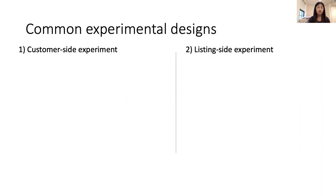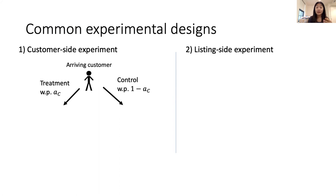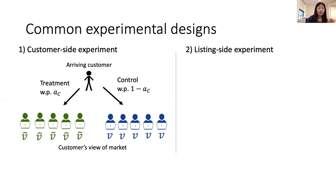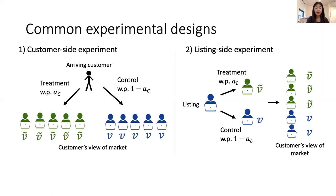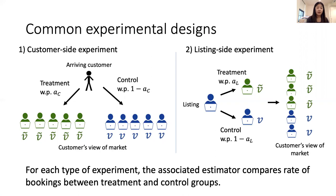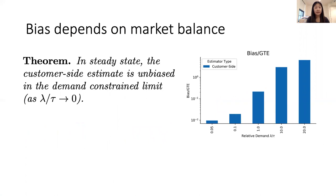Jumping back to the world of experiment designs: platforms commonly use two different types of experiments. One is the customer-side experiment, where customers are randomized into treatment and control and depending on their condition they see the market differently — having different utilities for different items. The other is the listing-side experiment, where listings are randomized into treatment and control. Treatment listings would be shown with the job completion rate but control listings wouldn't. A customer who comes will see some mix of both treatment and control listings. For each of these experiments there's a natural associated estimator: the difference in means between the treatment and control groups.